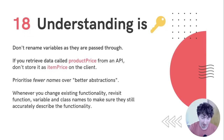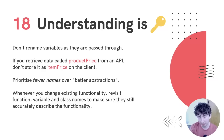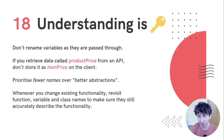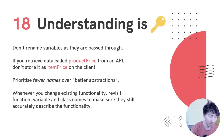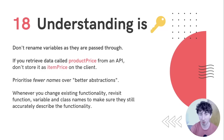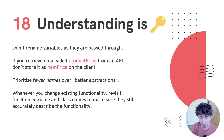Don't rename variables as they're passed through — that's a useful mental note to give yourself. If you're receiving a function argument and all you're doing is passing it to a sub-function, don't call them different things. Use the same name all the way through so someone doesn't have the overhead of understanding multiple different names and concepts. For example, if you retrieve data from an API and it's called 'product price,' don't store it as 'item price' on the client — just store it as 'product price.' That uniformity really helps maintain low mental overhead.